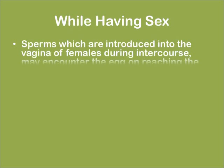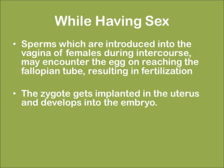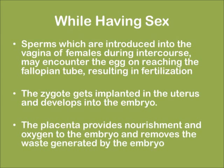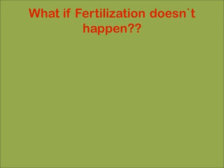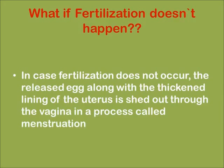Usually during intercourse, sperms introduced into the vagina may encounter the egg on reaching the fallopian tube, resulting in fertilization. The zygote gets implanted in the uterus and develops into the embryo. The placenta provides nourishment and oxygen to the embryo and removes the waste generated by it. The gestation period is 9 months in humans, after which the child is born due to uterine contractions. If fertilization doesn't happen, the egg along with the thickened lining of the uterus is shed out through the vagina in a process called menstruation.